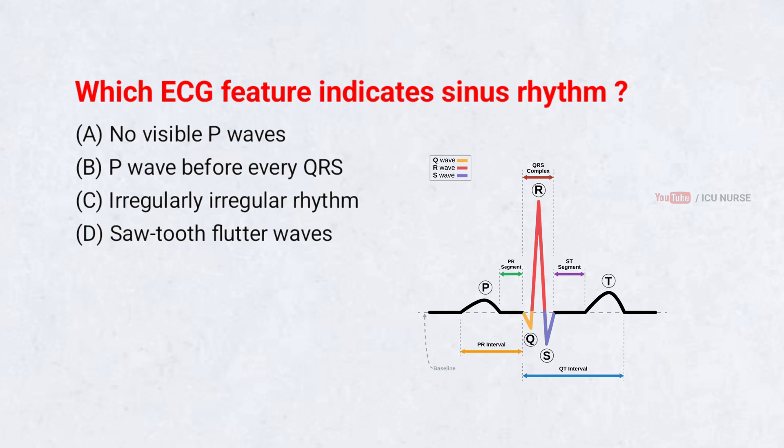Which ECG feature indicates sinus rhythm? A. No visible P-waves, B. P-wave before every QRS, C. Irregularly irregular rhythm, D. Sawtooth flutter waves. Correct answer: B. P-wave before every QRS.